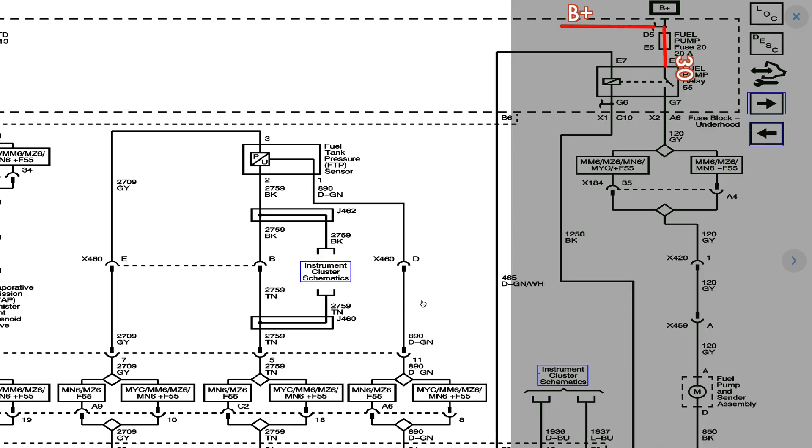Looking at the wiring diagram, we have power coming in to terminal 30. We have our outlet on terminal 87 that feeds the pump, goes right through the pump and right to ground.